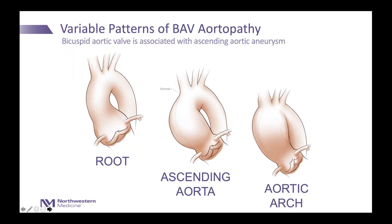In about 40% of patients, we have data from large cohorts followed over 25 to 30 years showing that patients, when followed long enough, are likely to develop aortopathy — meaning the presence of an aneurysm. There are three different locations where aneurysms tend to form with bicuspid aortic valve disease. When your cardiologist says they are looking for aortopathy, they are looking for enlargement of the root — the part of the aorta just above the valve.